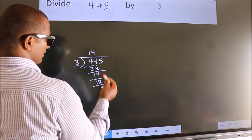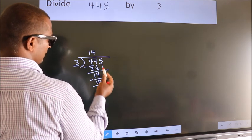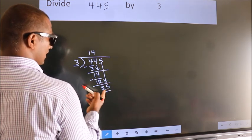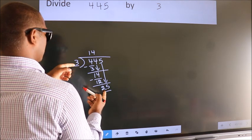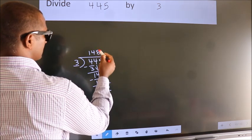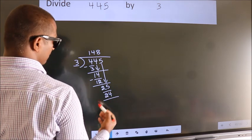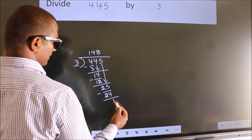After this, bring down the beside number. So 5 down, making 25. A number close to 25 in the 3 table is 3 times 8 equals 24. Now we subtract. We get 1.